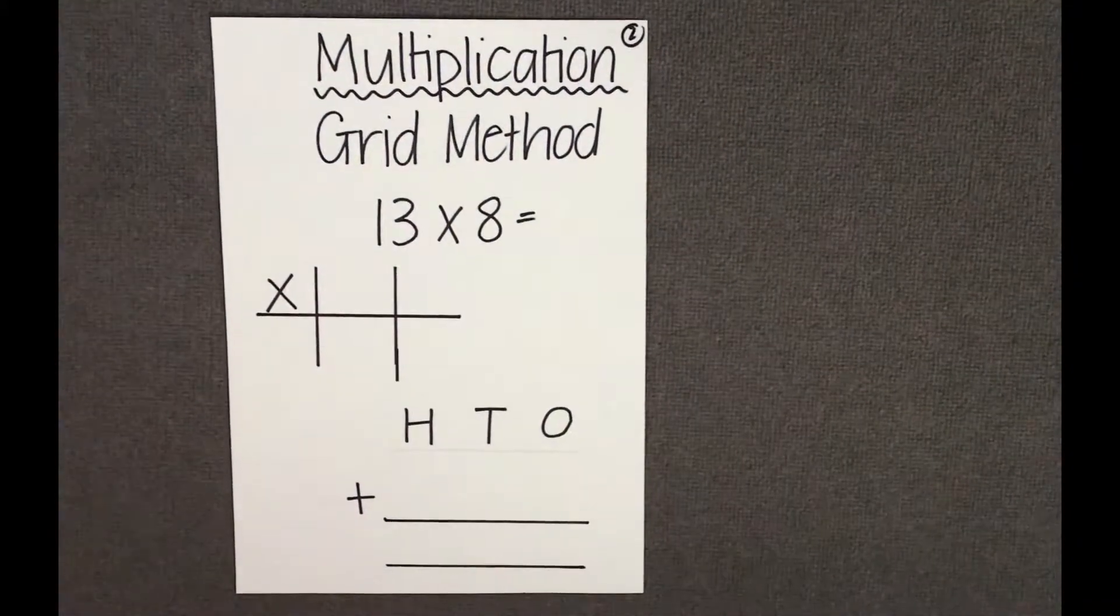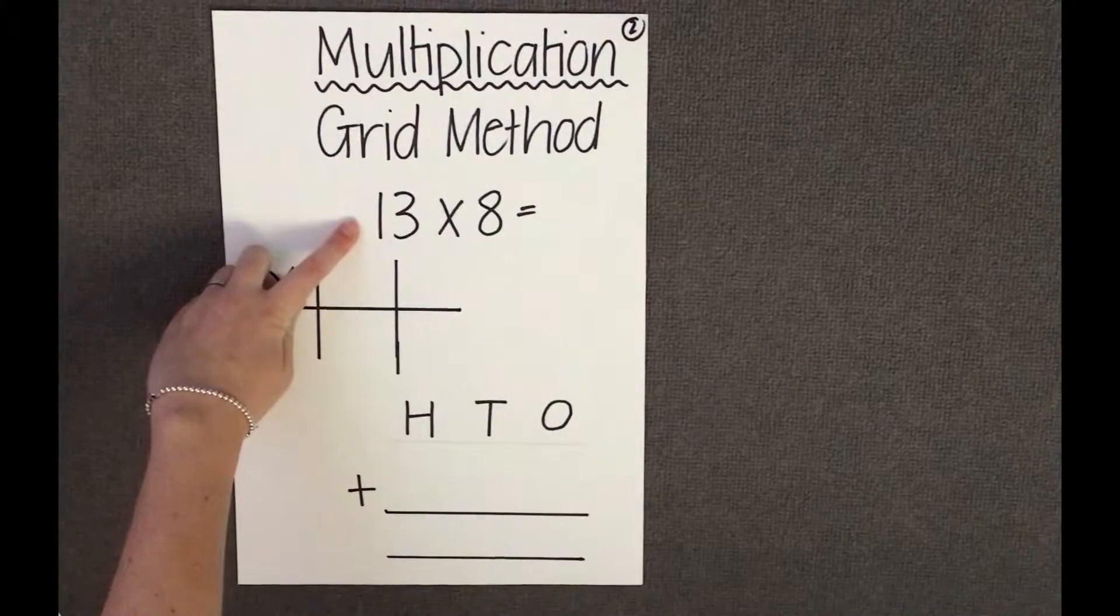Let's start by reading the question. 13 times by 8 equals.